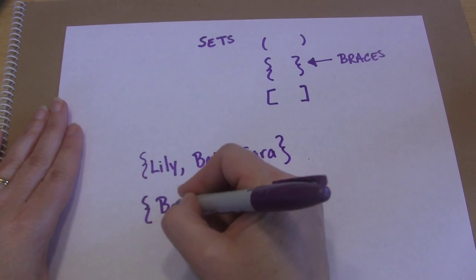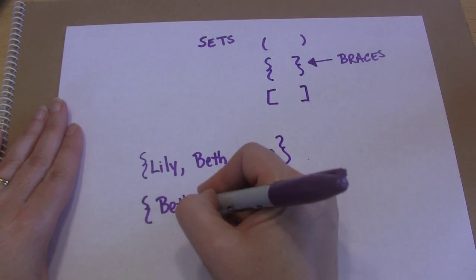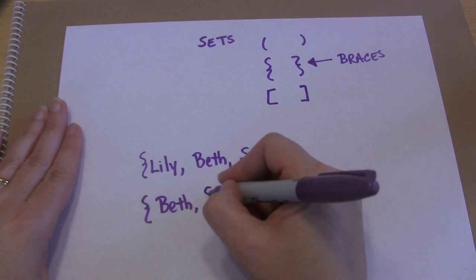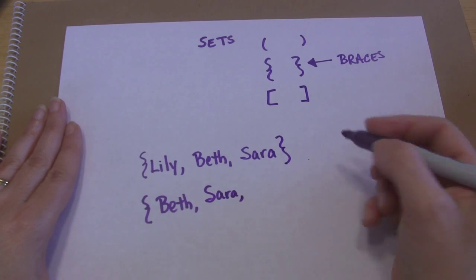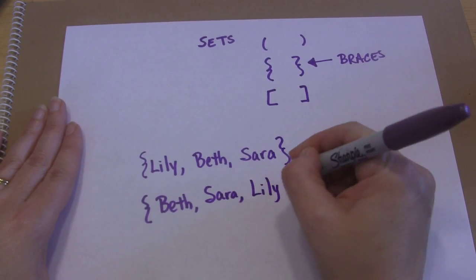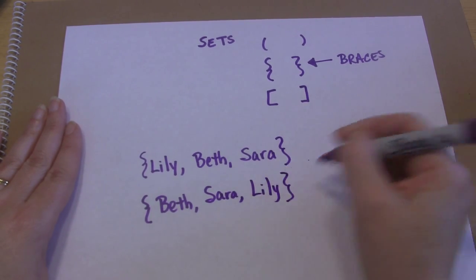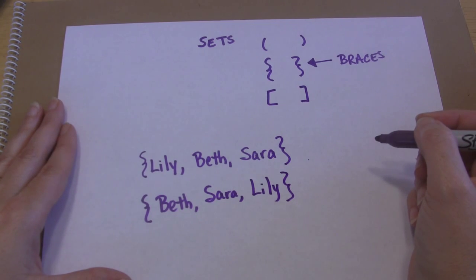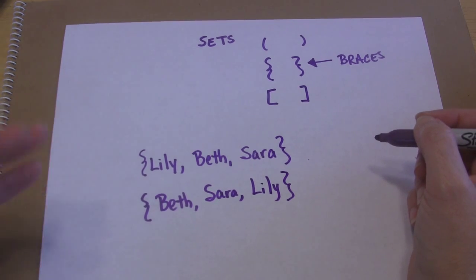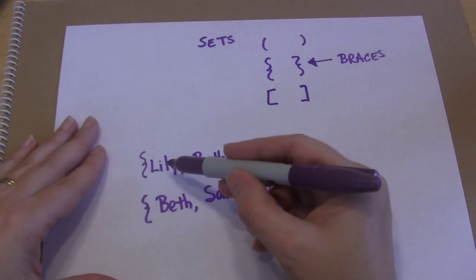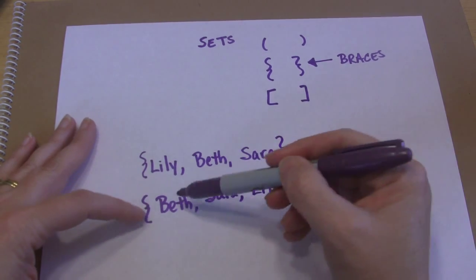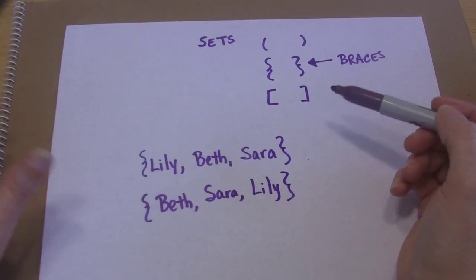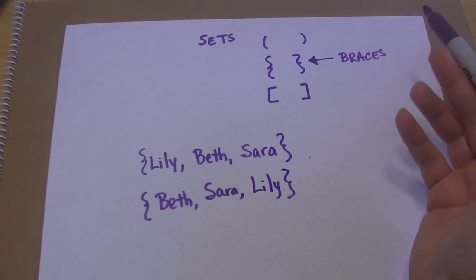Interestingly enough, if you were to take those same parts of your set and put them in a different order, mathematically those would be identical — they would be equivalent to each other. There is no difference between a Lily, Beth, Sarah set and a Beth, Sarah, Lily set. They are the same.